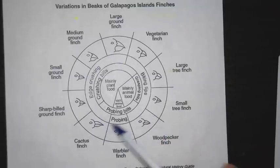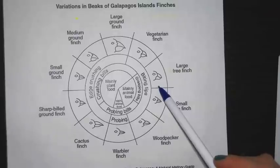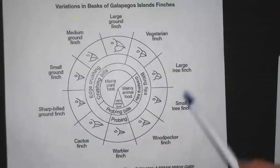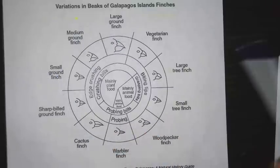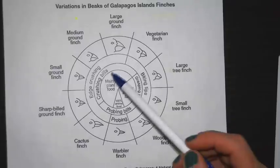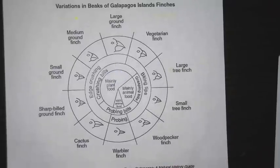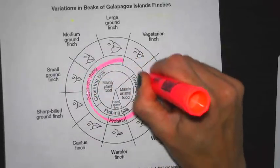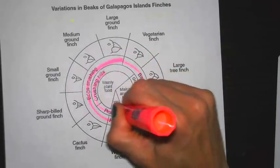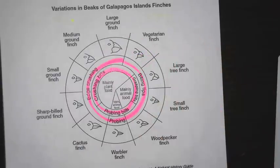First, don't pay attention to the pictures because sometimes they're misleading. On the outside of the finch wheel, that's where all the names are — medium ground finch, small ground finch — and some have very similar names, so be careful. The inner layer tells you what the beak is capable of doing: can it crush, can it probe — probe means get into tiny spots — or is it more for biting things?